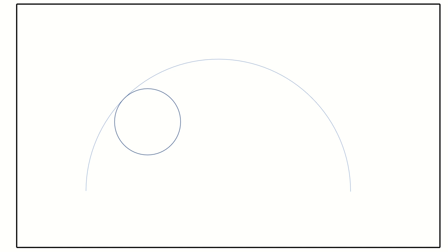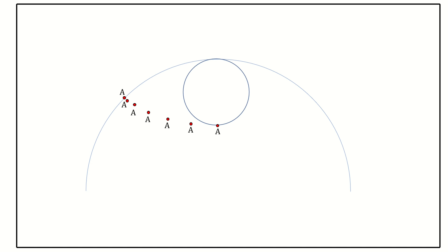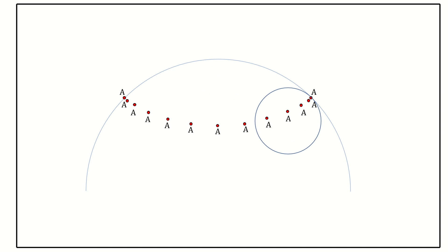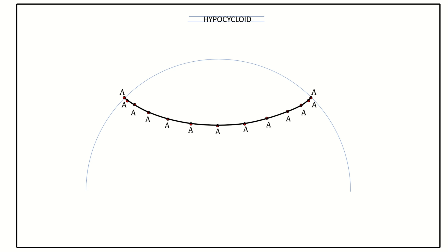If you have an arc of the bigger radius — that is, radius 100 mm — inside this arc, if I have a smaller circle of diameter 50 mm or radius 25 mm, and this circle rolls one complete revolution, the point A will move outwards for half the revolution, then after half the revolution it moves inside. After one complete revolution, point A comes back and touches the bigger arc. This path traced by point A is called the hypocycloid.